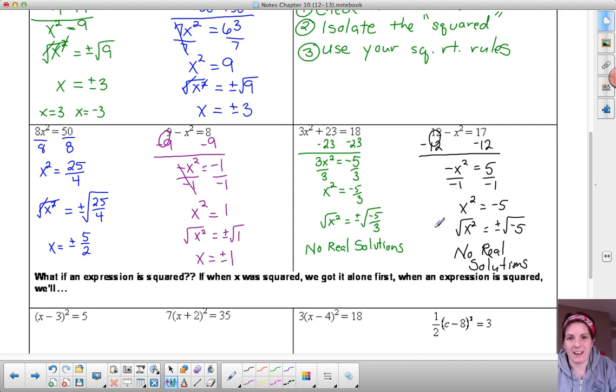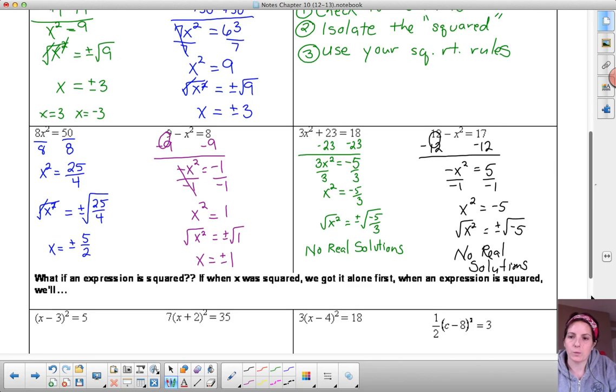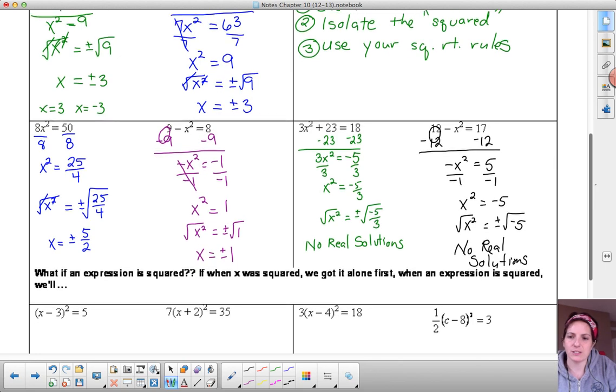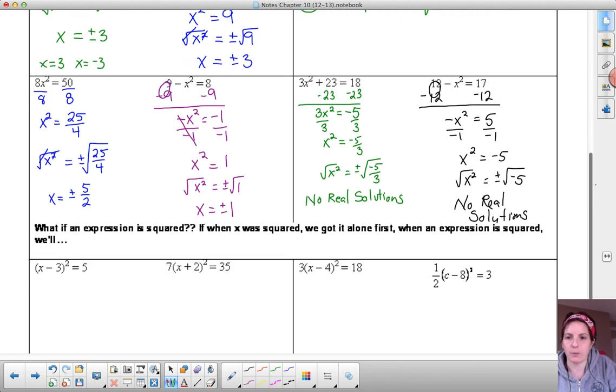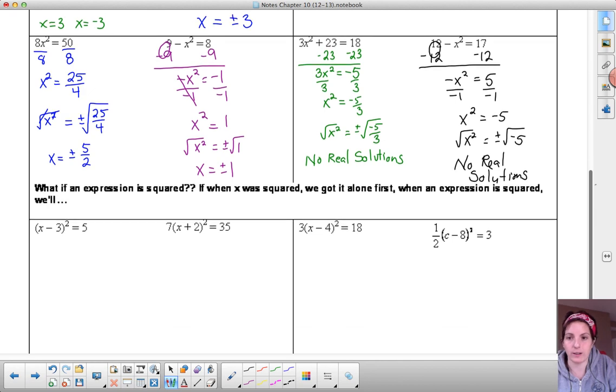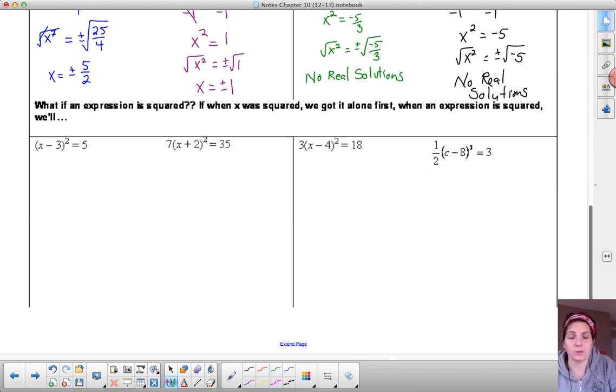Hopefully you did just fine on those four problems. Now let's go down below. So what to do if it's not just a number being squared, but what if it's a quantity being squared? Moments ago I told you that the steps are going to be essentially the same. We're going to make sure that the part that's being squared is isolated. So in this case, in this first problem, that x minus 3 quantity is already isolated.